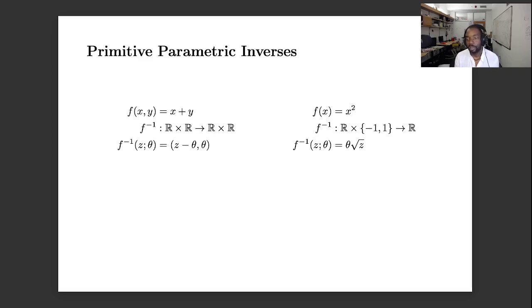For the square function it's a similar story except that our parameter space is minus 1 or 1 to capture the positive or negative root.